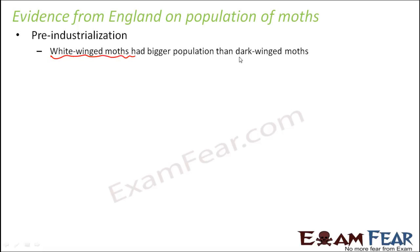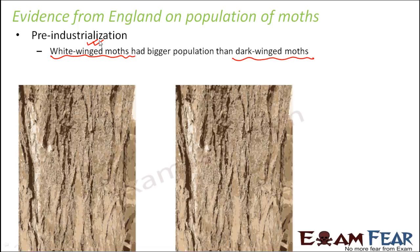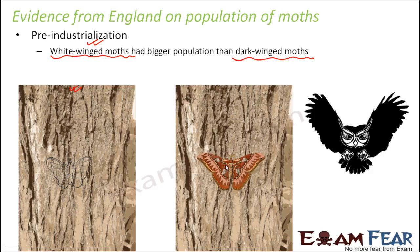There were two varieties of moths at that time, but more widespread were the white-winged moths — very few moths had dark wings. These moths are generally found on tree barks, and the white-winged moths were more prevalent compared to the dark-winged moths. Here you can see the white-winged and the dark-winged moths.